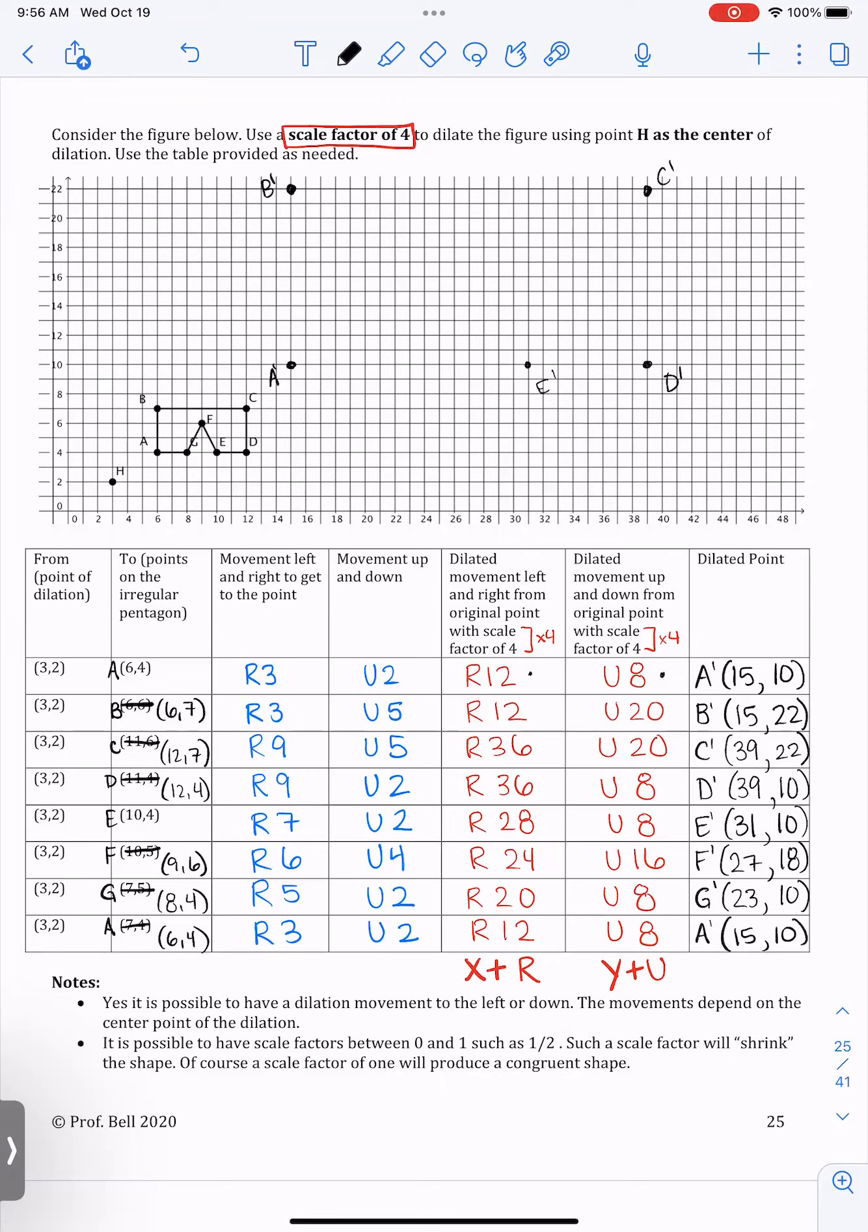And then 31 comma 10. E prime and finally G prime at 23 comma 10.